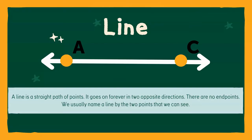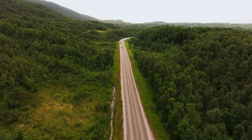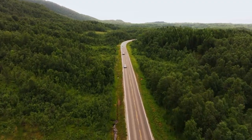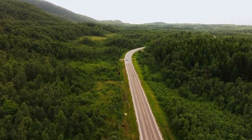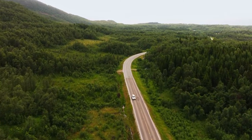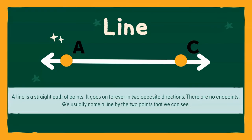A good example of this is if you've ever been driving — you're riding in the backseat of the car, your mom or dad is driving somewhere, and you look out and you see those white lines along the side of the road. That's an example of a line because it just goes in a straight line forever. Now when we think of a line, we usually name it by the two points that we can see. So in this example, we have point A and we also have point C. There's probably point B in the middle, and it'll keep going with point D and point E and so on, because a line goes on forever in two opposite directions.